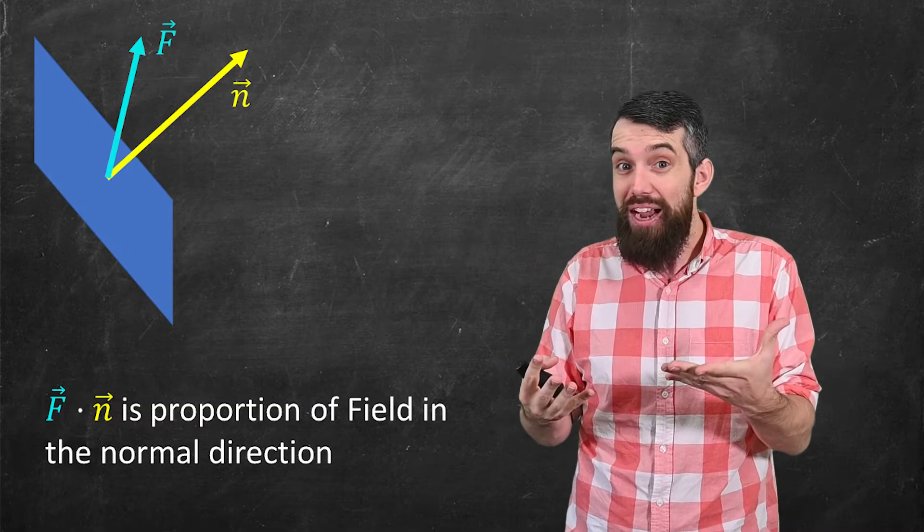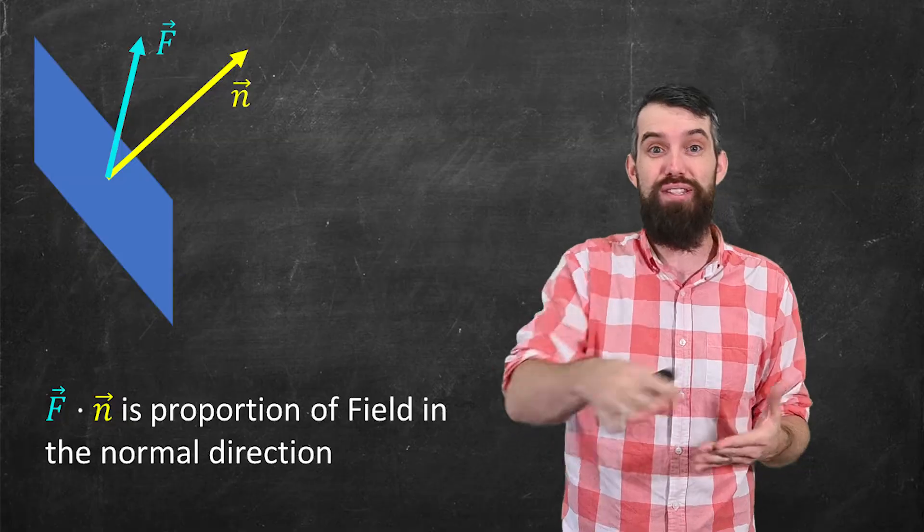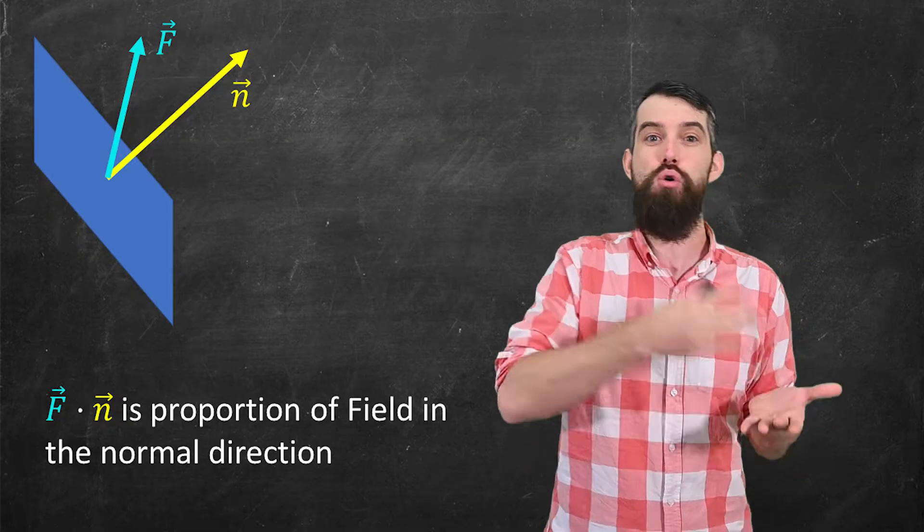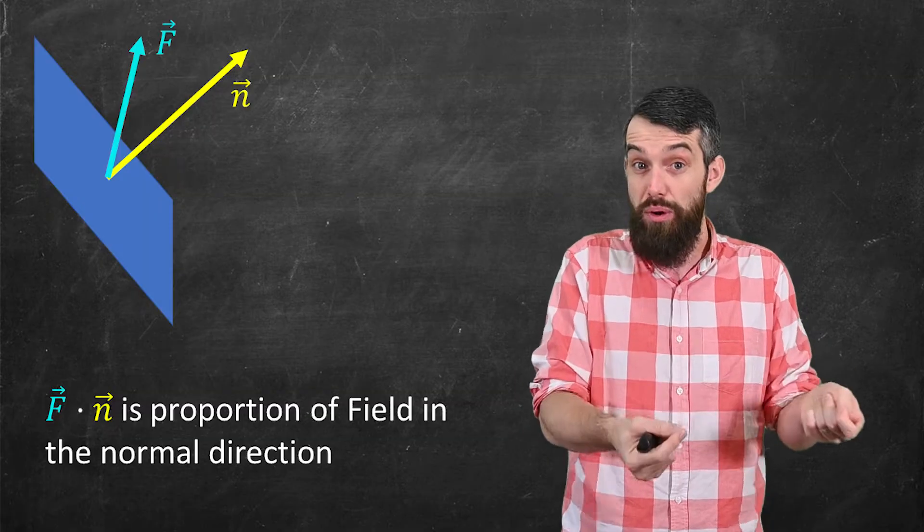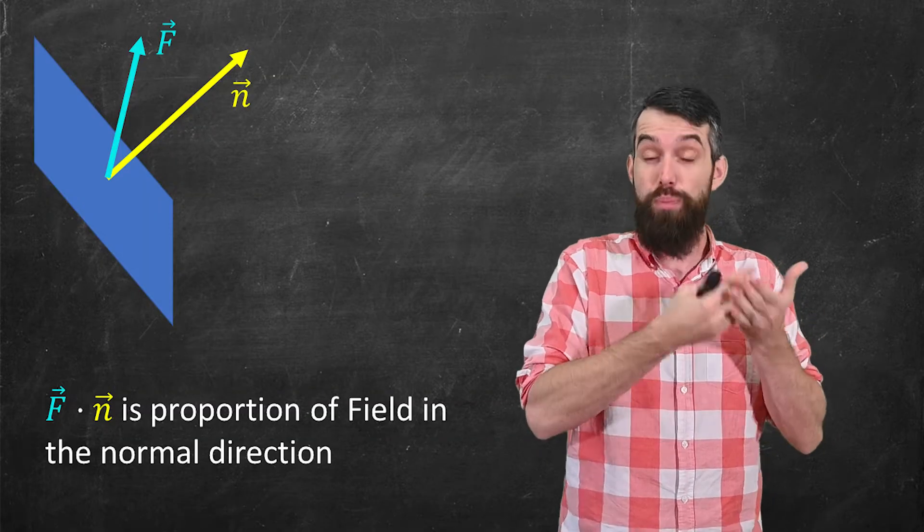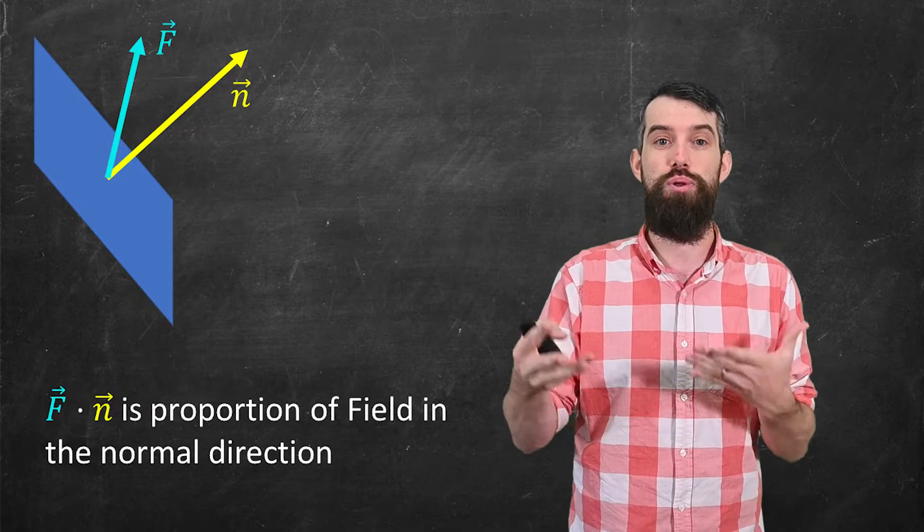If the f vector lay in the surface, if it was tangential to the surface, then there would be no crossing of the surface at that particular point. And f dot n would be zero in that case. But generally, f dot n tells us the proportion of the field that's in the normal direction.